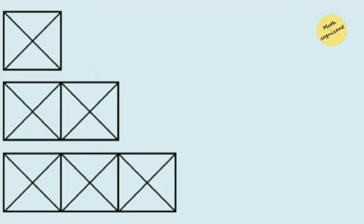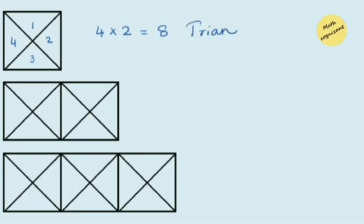Look at the first figure — there is only one square, and in that one square you can see there are four triangles: 1, 2, 3, 4. When you have four such triangles you need to multiply by 2, because in each corner there will be a formation of bigger triangles. So there are a total of 8 triangles in the first figure.